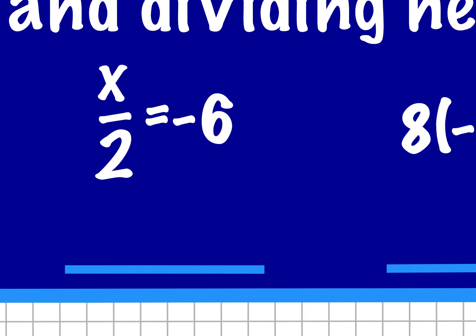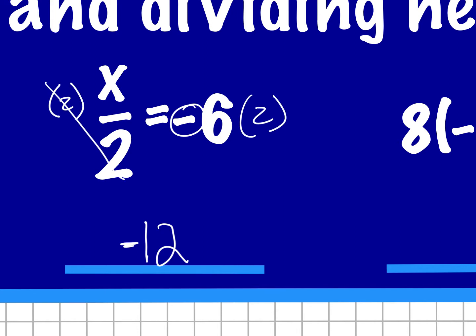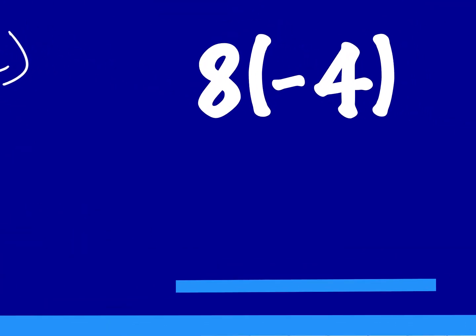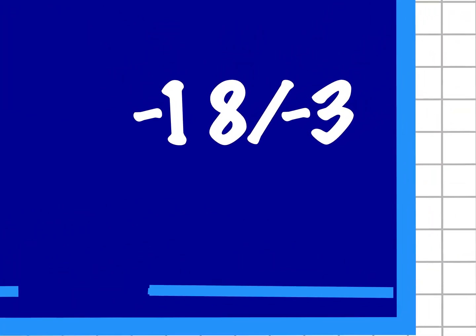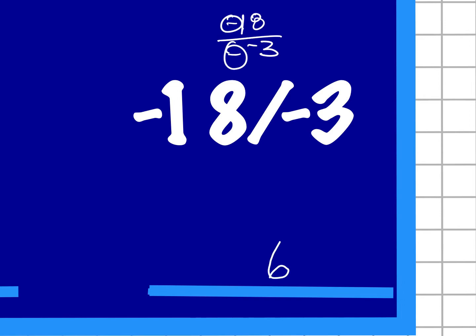This one: x divided by 2 equals negative 6, so I know 12 divided by 2 is 6, but we've got that one negative, so it's got to be negative. I would have to multiply by 2 here to get rid of the 2. Negative 6 times 2 is negative 12. Over here, this just means 8 times negative 4, which is negative 32 — these parentheses mean multiplication. And negative 18 divided by negative 3: 18 divided by 3 is 6, and two negatives make a positive.